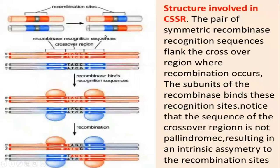Now let's see the structure which is involved in CSSR. We have a pair of symmetric recombinase-recognizing sequences. These are the regions where the recombination is going to happen. The subunits of the recombinase bind these recognition sites and then undergo recombination. These are the recombination sites that the recombinase is going to recognize.